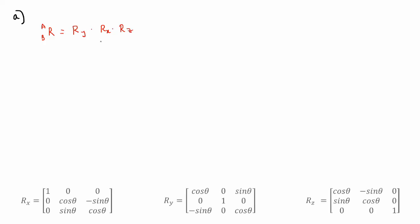To find the rotation matrix RAB we can multiply the individual rotation matrices that would be RY times RX times RZ. The formula for these three rotation matrices are shown here and they were discussed in the previous video. What you have to do is plug in the relevant angle to the relevant rotation matrix and multiply them all together.